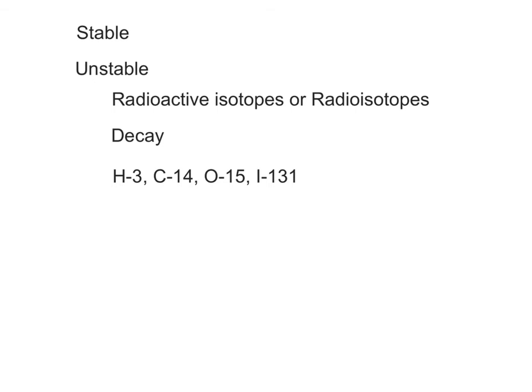Some examples of radioisotopes include hydrogen-3, carbon-14, oxygen-15, and iodine-131. As a radioisotope decays, it releases radiation in the form of subatomic particles or energy, and because of this can even transform into a different element. An example is the decay of the radioisotope carbon-14 into nitrogen-14.